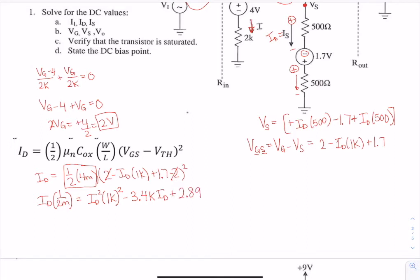Now we need to make sure that we bring this quantity over to the other side, so we have it equal to 0. So bringing that over, we have ID squared times 1k squared, and then this is going to be minus 3.9k ID plus 2.89.